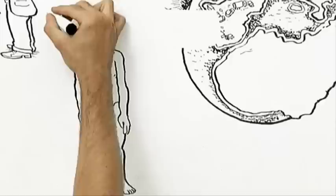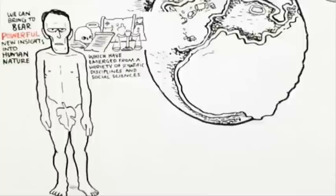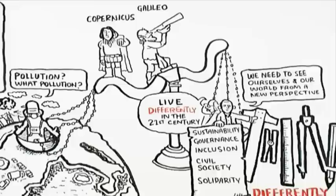In critically examining what enlightenment values have come to mean to us, what we can now bring to bear is powerful new insights into human nature, insights that have emerged from a variety of scientific disciplines and social sciences over the last 20 or 30 years.